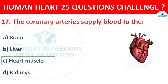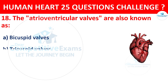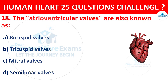Question number 18. The atrioventricular valves are also known as? Options: Bicuspid valves, Tricuspid valves, Mitral valves, or Semilunar valves. The correct answer is B, that is Tricuspid valves.